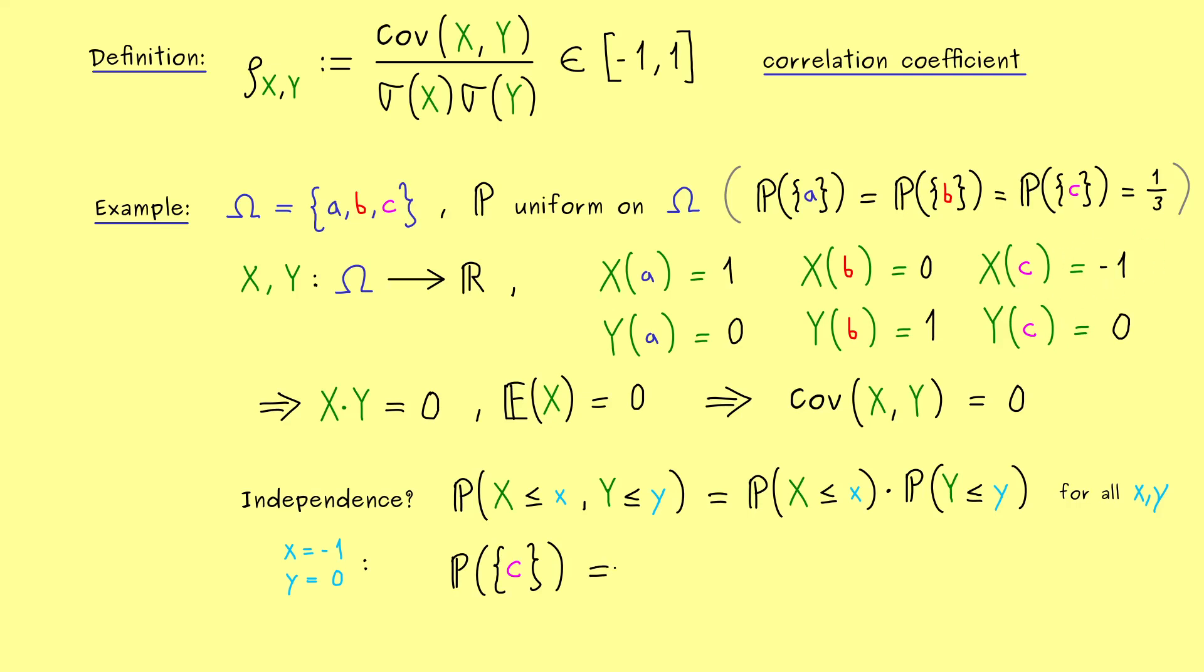However, now on the right hand side, we find something different. We also find the probability of c in the first factor, but in the second factor we find more. There, we have the probability of c and a.